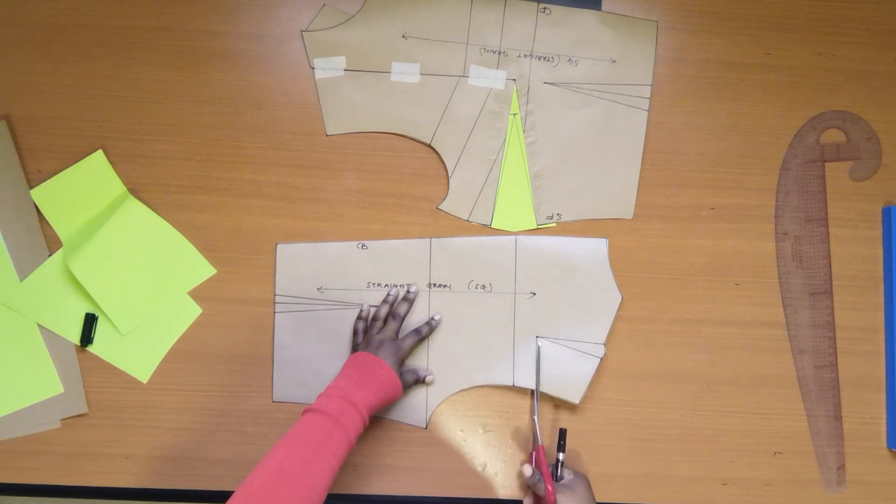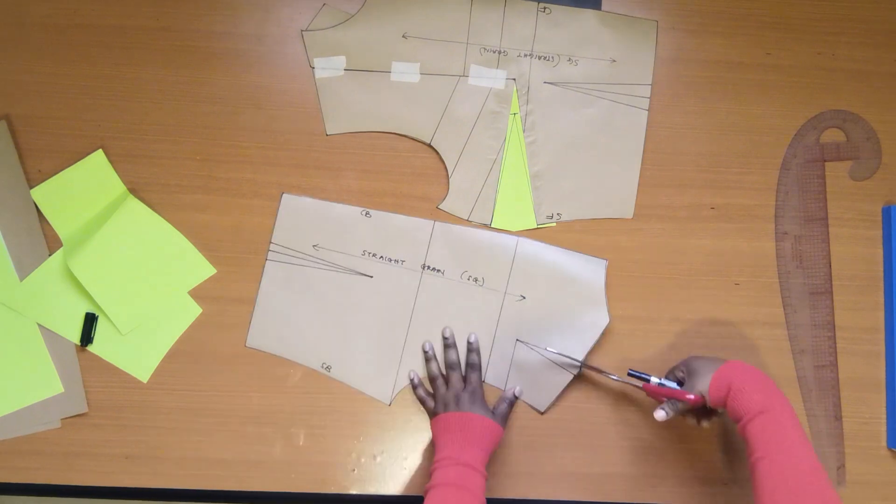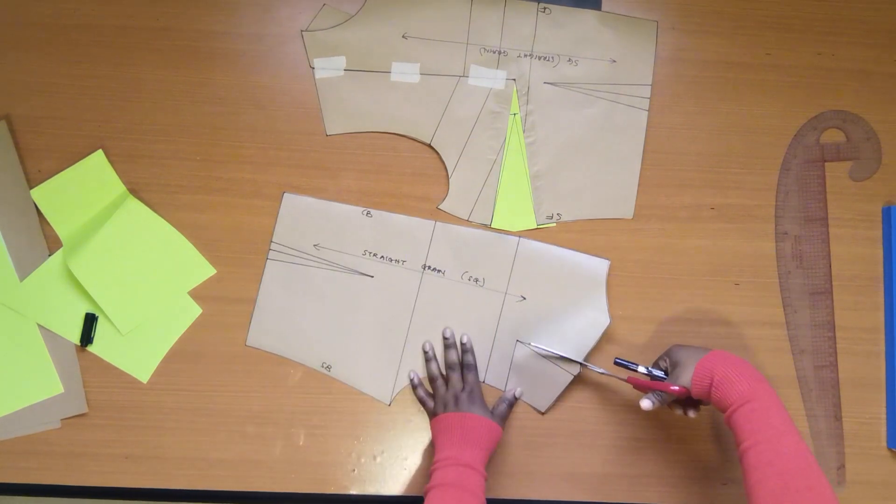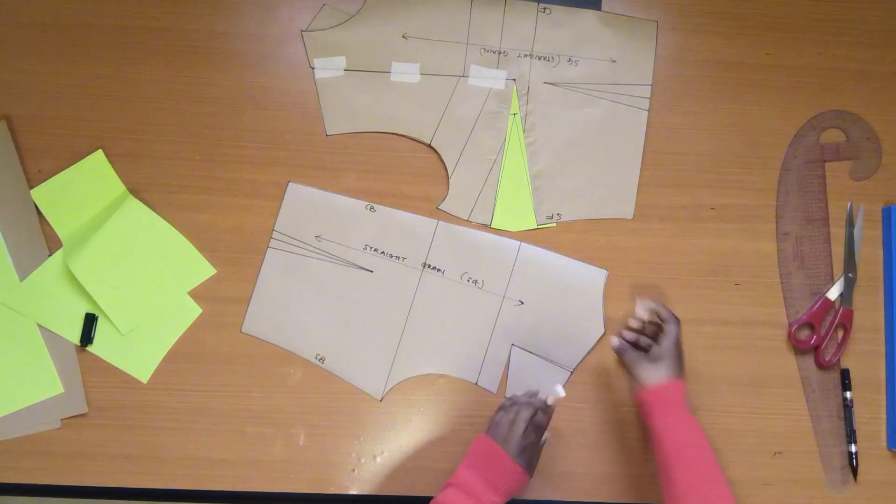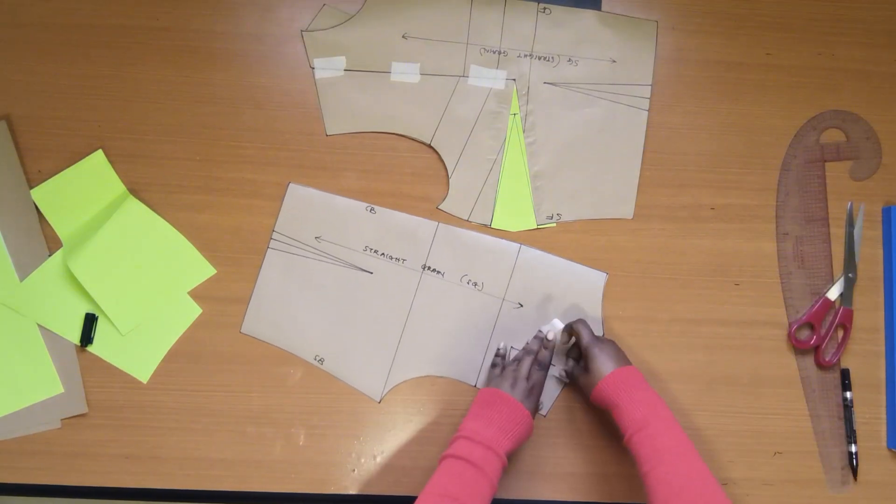Slash open the line and slash open the shoulder dart. Pin down the dart and secure with tapes.